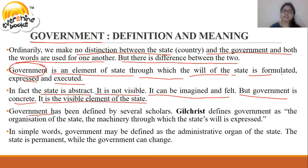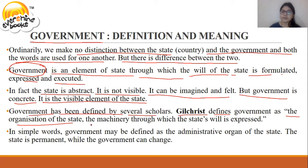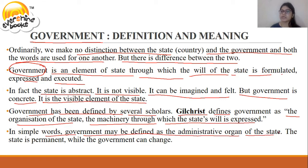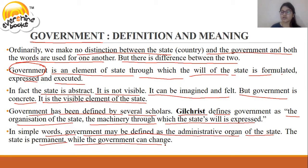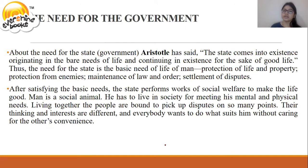Government has been defined by many scholars. Gilchrist defined government as 'the organization of the state, the machinery through which the state will is expressed.' In simple words, government may be defined as an administrative organ of the state. The state is permanent while the government can change.